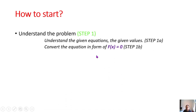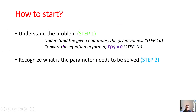After you have understood the equation and the given values, you have to convert the equation to the form where f(x) equals 0. Here, x will be the unknown or the solution that you want to find using bisection methods. Your equation must be equal to zero — this is the form you should develop.